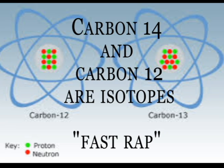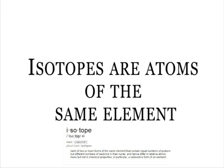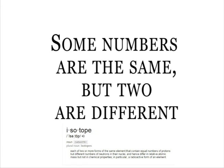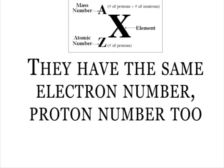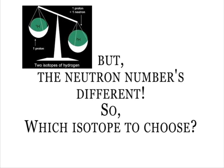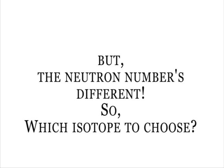So before turning the page, count Carbon-14 to tell you its age. Isotopes are atoms of the same elements — some numbers are the same, but two are different. They have the same electron number, proton number too. But the neutron number's different, so it's isotope to choose.